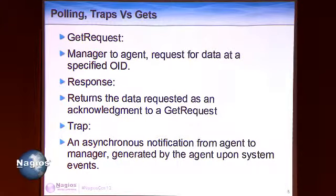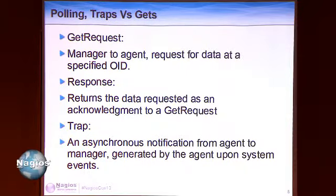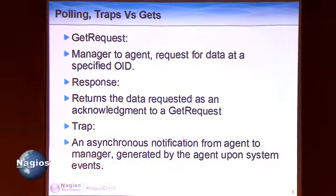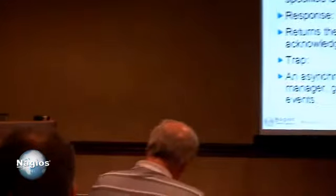The three major types you'll be working with are GET requests, responses to GET requests, and TRAPs. GET requests are the manager talking to the agent and saying, hey, what do you have at this OID? Here's my community string, just send me back the data. The response comes back. One thing to point out: TRAPs are asynchronous, while GETs and responses are synchronous, but all of this is over UDP — not a continual connection like TCP. So when we get to firewalls, that does throw some people for loops.